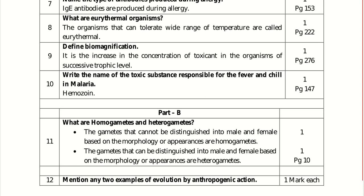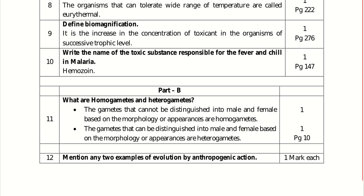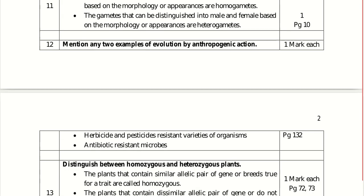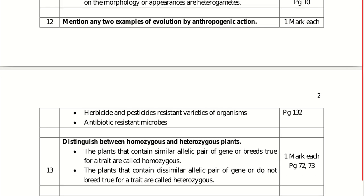Mention any two examples of evolution by anthropogenic action. Herbicide and pesticide resistant varieties of organisms is one example. Antibiotic resistant microbes — especially the superbug — is another example of evolution due to human interference, which we call anthropogenic action.